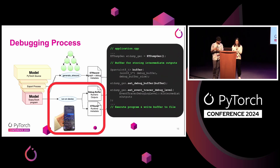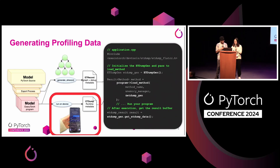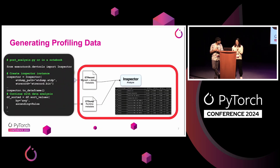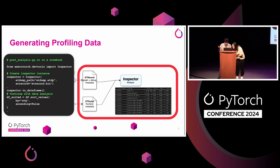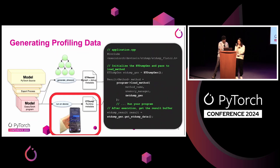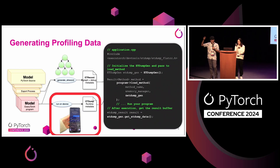Regarding aggregation across multiple runs: yes, we do support that. The ET dump runtime artifact supports multiple runs — you can collect data for multiple runs, write them into ET dump, and then the Inspector will aggregate the latency and profiling data for those runs. If you notice in the data frame, these are each percentiles: P10, P50, P90 performance. When presented to you, it's automatically aggregated. When you set up the buffer for the ET dump, you set that to the number of blocks — the number of iterations you plan to run the model for. And after the fact, if you have multiple executions across different devices, you can take the data frames and compare those however you want.